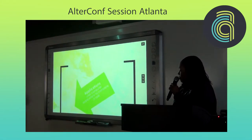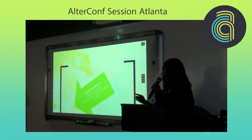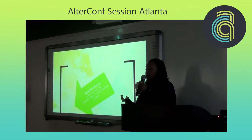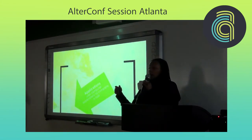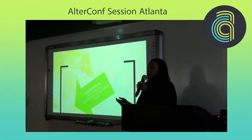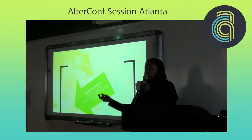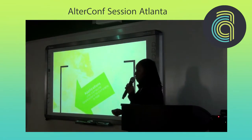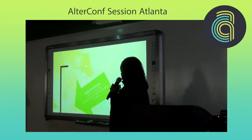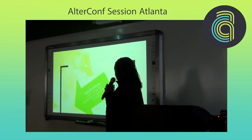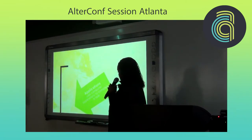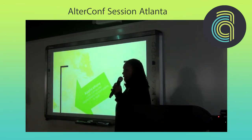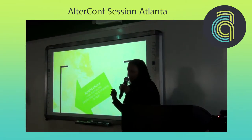The second skill group is applications — knowing how to use web-based applications, native applications, desktop applications like Microsoft Word. The second skill group says that a child knows how to complete a task.